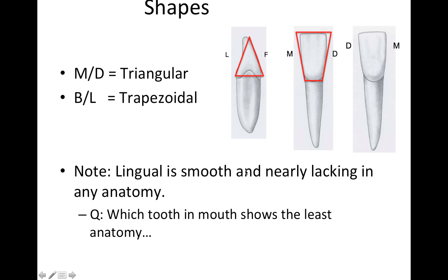Note: the lingual side of the tooth is very smooth and nearly lacking in any anatomy. This comes up on boards — here's a shot of the lingual, and you can tell it's really quite smooth with no distinguishing anatomy. You might see a question asking which tooth in the mouth shows the least anatomy from a lingual view.